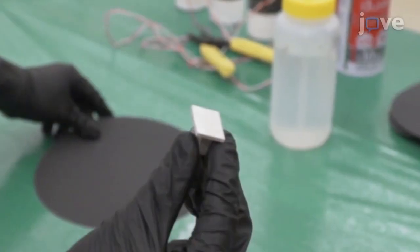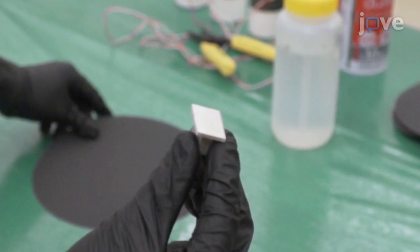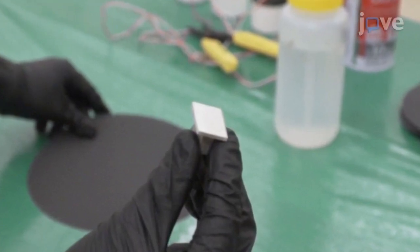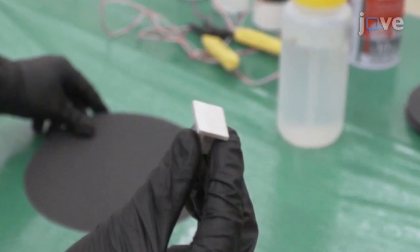Begin by using a computer numerical control machine to cut as-received aluminum 3003 alloys into several 1.5 by 2 square centimeter coupons.